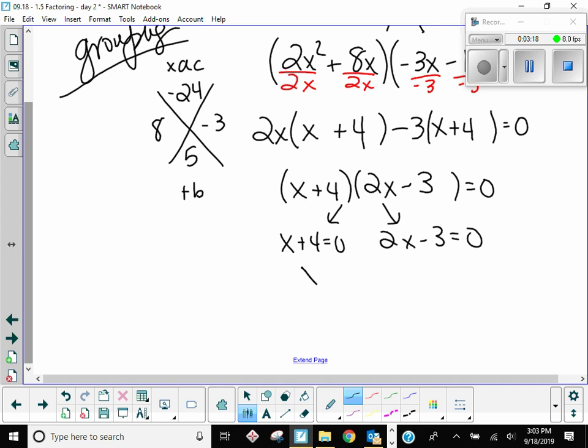So, you subtract 4 from here and get negative 4. And on the second equation, you add 3, divide by 2, and you get 3 halves. That's factored by grouping for a trinomial.